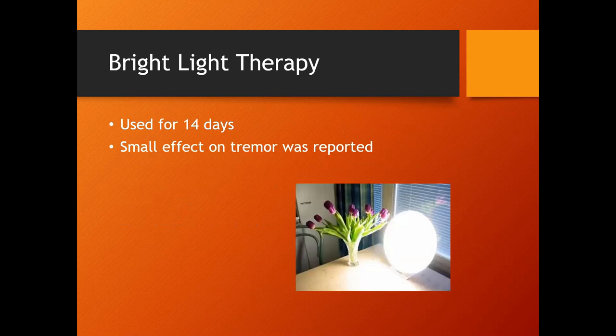The next intervention I'd like to highlight is the bright light therapy intervention. Basically this intervention was looking at suppressing melatonin production to see if it would help with tremor reduction. Individuals that participated did the bright light therapy for 14 days. Basically the outcome of it was that there was a very small effect on tremor reduction reported by the individuals who participated. Basically further investigation is needed for this intervention.